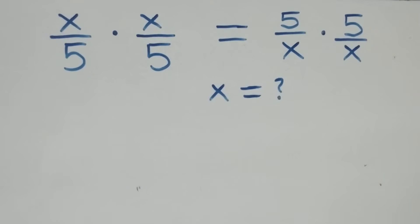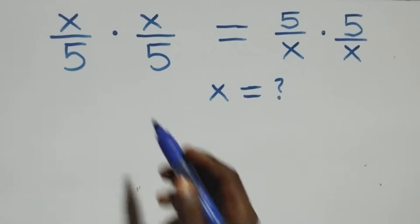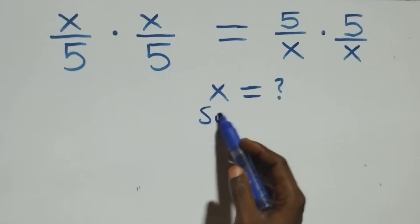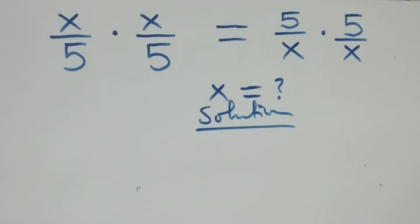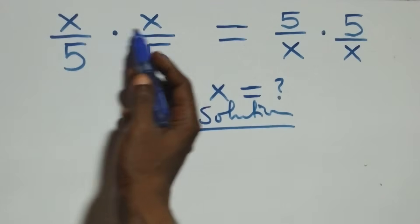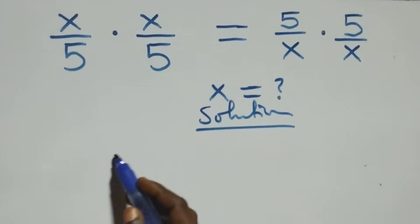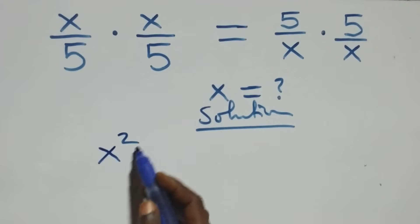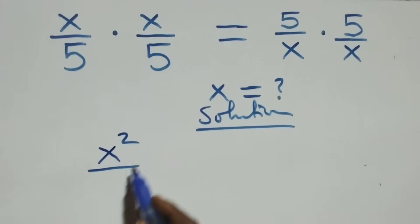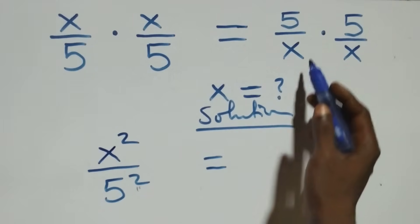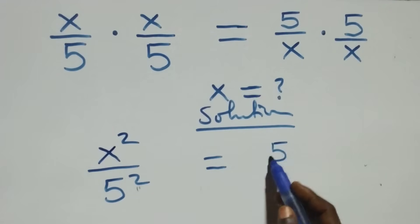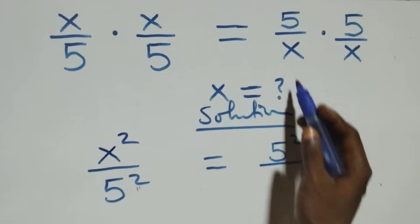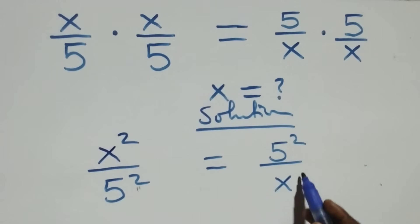Hello, you are welcome. How to solve this nice algebraic equation. What we have here, we can multiply directly: x times x written as x squared, over five times five that's also five squared. Then equals this side as well: five times five we have five squared, then over x times x also x squared.